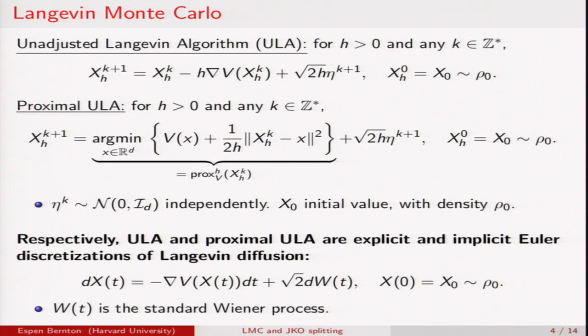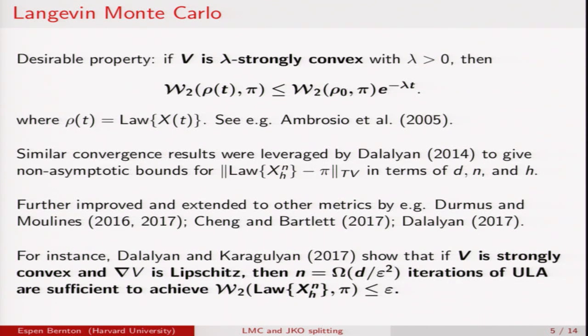Note that, respectively, these are explicit and implicit Euler discretizations of Langevin diffusion. So why can that be considered a good thing in a sampling setting? Well because of properties like these. If V is lambda strongly convex then the law of the particle that undergoes Langevin diffusion converges exponentially fast to pi.